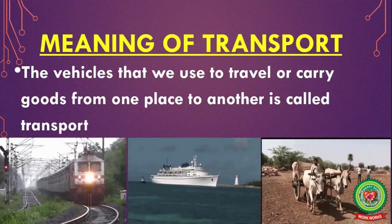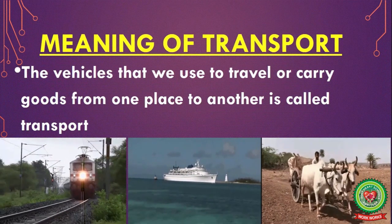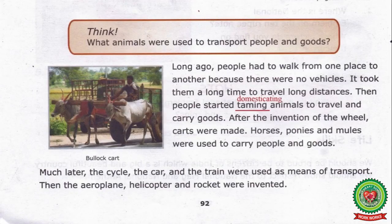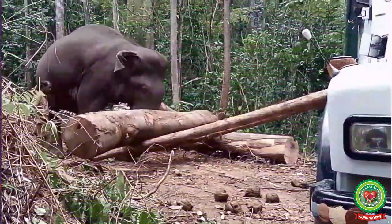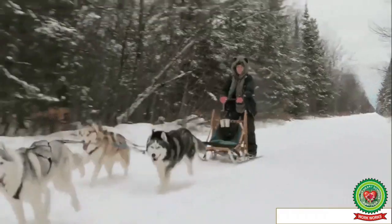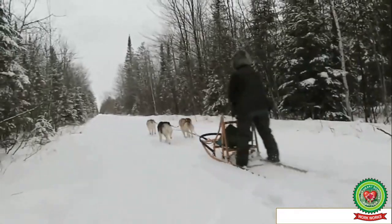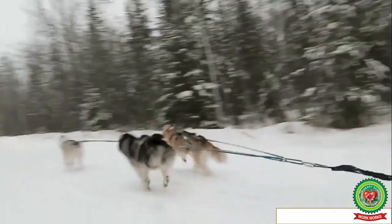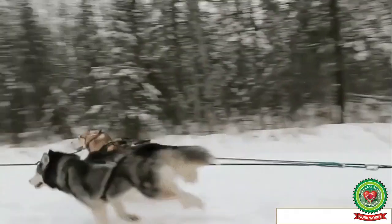The vehicles that we use to travel or carry goods from one place to another is called transport. Now, students, it's time to think and answer: what animals were used to transport people and goods? Bullock cart, elephant, horse, and dog were the animals used. Why were animals used to transport people and goods? We will find the answer in the next paragraph.